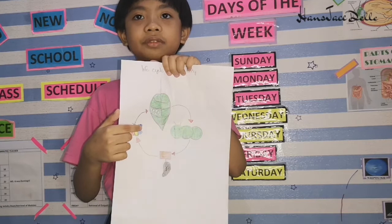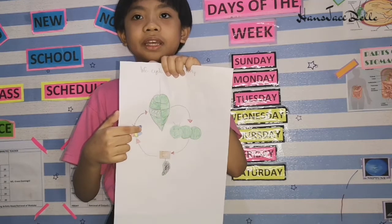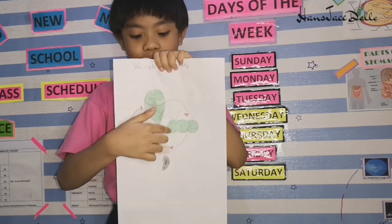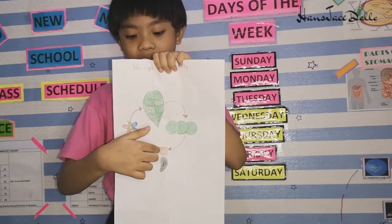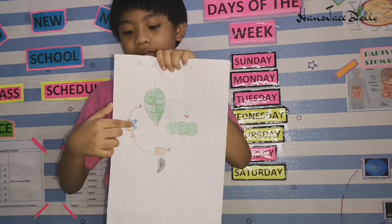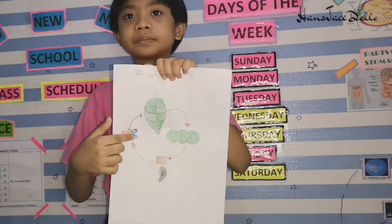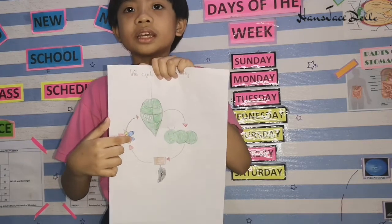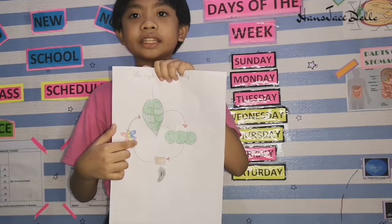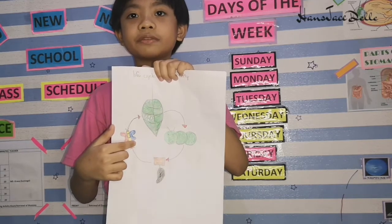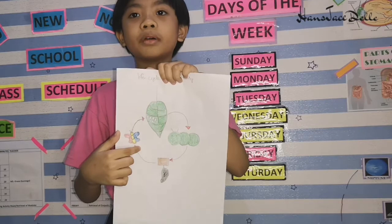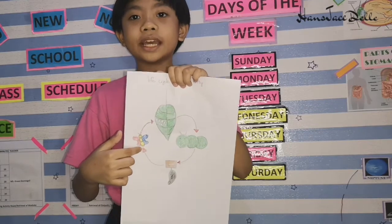Life cycle of a butterfly: egg, caterpillar, pupa, and butterfly. This series of changes in the life cycle of a butterfly is called metamorphosis.